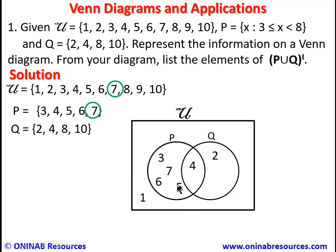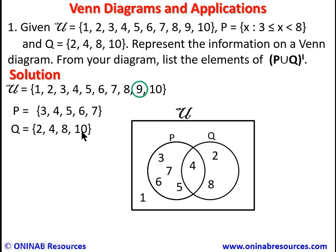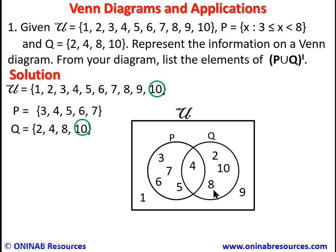8 is in Q but not in P, so it stays in the Q-only region with 2. 9 is neither in P nor Q, so it stays within the rectangle but outside the two circles. 10 is in Q but not in P, so it stays in the Q-only region with 2 and 8. We have successfully represented the information on the Venn diagram.